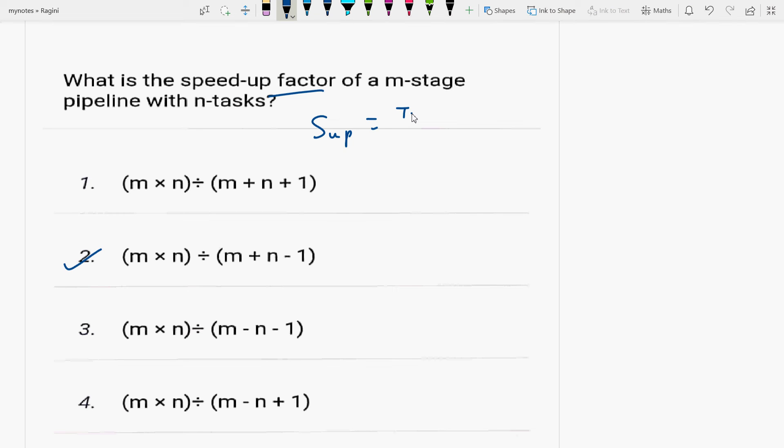Time taken is number of stages into number of tasks. For pipeline tasks, the task is N and stage is M. One task takes M cycles, and N minus one takes cycles. So the formula is this, which is correct. SUP means speed up.